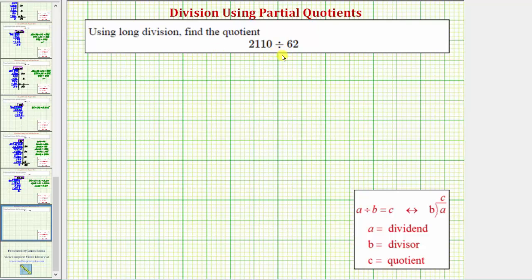We're asked to use long division to find the quotient. For this example though, we'll use the method of partial quotients rather than the traditional long division algorithm.